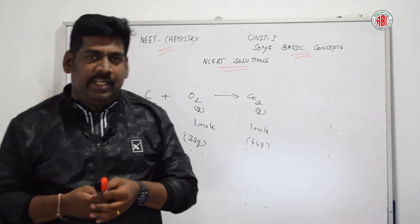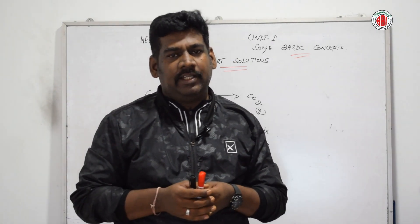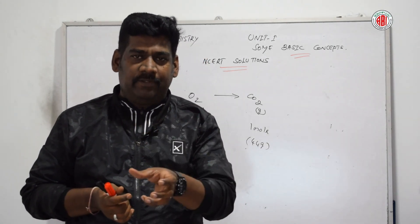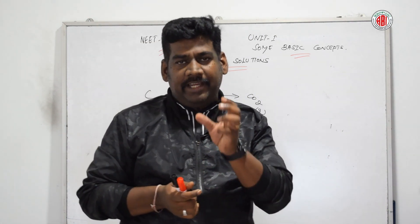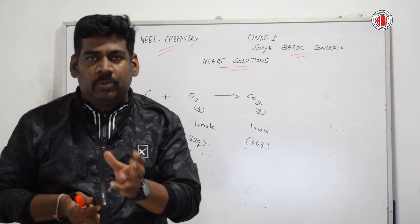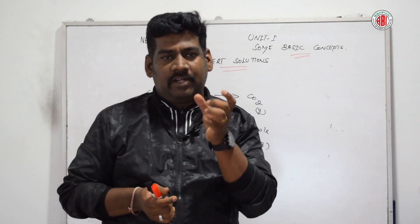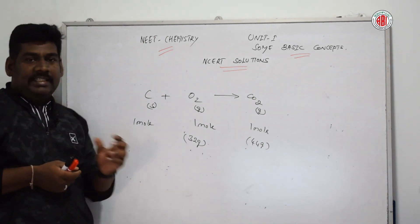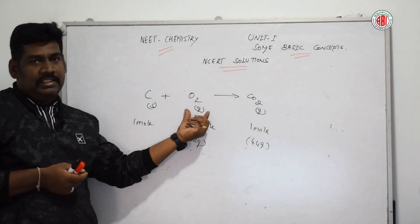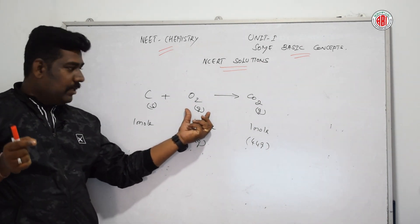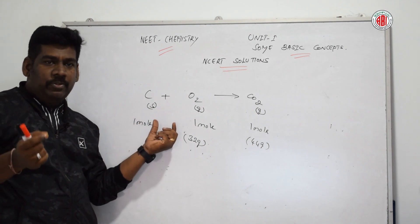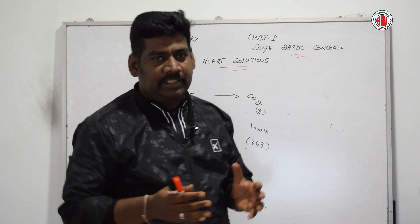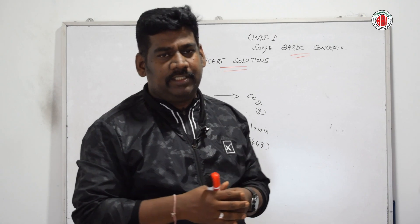According to the second question, which is related to the limiting reagent: 16 grams of dioxygen is available, which will react with 0.5 mole of carbon to give 22 grams of carbon dioxide. So 16 grams of dioxygen reacts with 0.5 mole of carbon to give 22 grams of carbon dioxide. This is one of the limiting reactants.